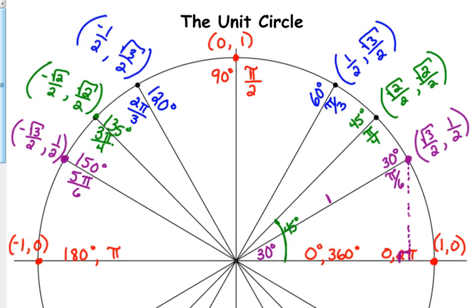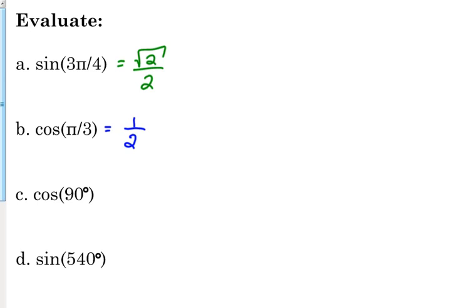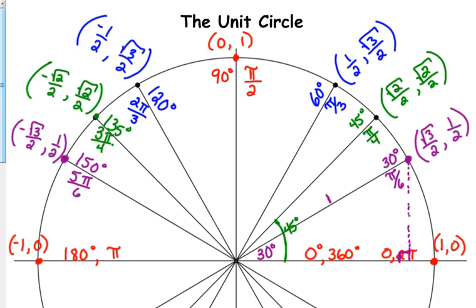Cosine of 90 degrees. Cosine is the x coordinate. At 90 degrees, the x coordinate is 0. Because the x coordinate at 90 degrees is 0. Cosine is x.